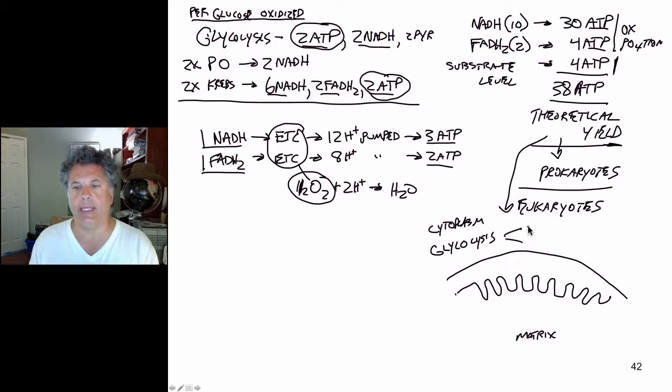We've got NADHs and those NADHs need to be imported into the matrix of the mitochondrion. And we also have pyruvates that need to be transported into the matrix because pyruvate oxidation occurs in the mitochondrial matrix.